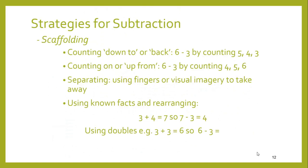If they're counting up and go 3, 4, 5, 6, they're going to say that 6 take away 3 is 4. We need to count up from 3: 1 to get to 4, 2 to get to 5, and 3 to get to 6 — so the answer is 3.